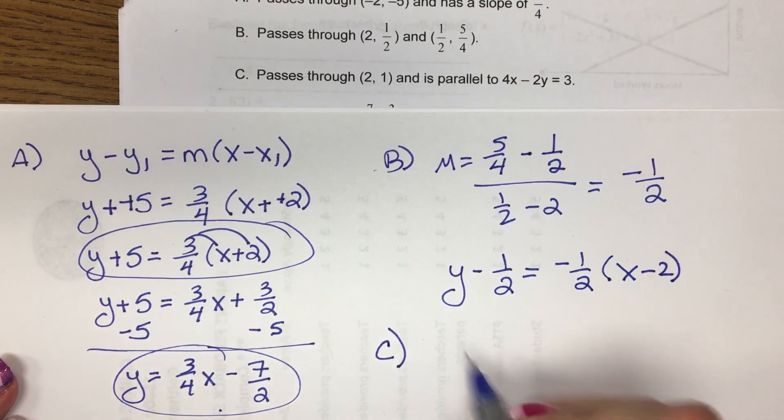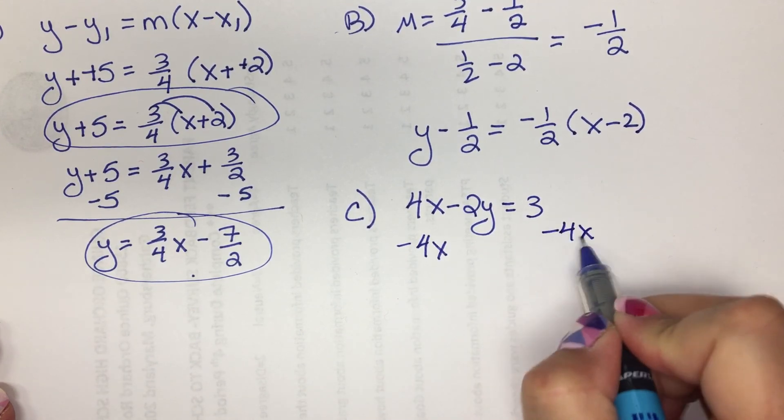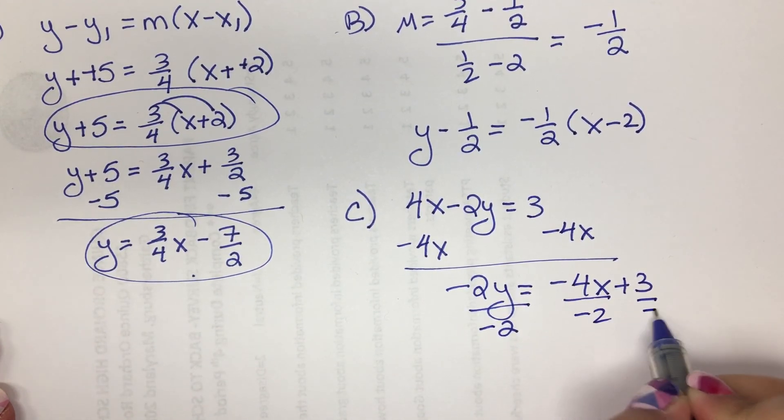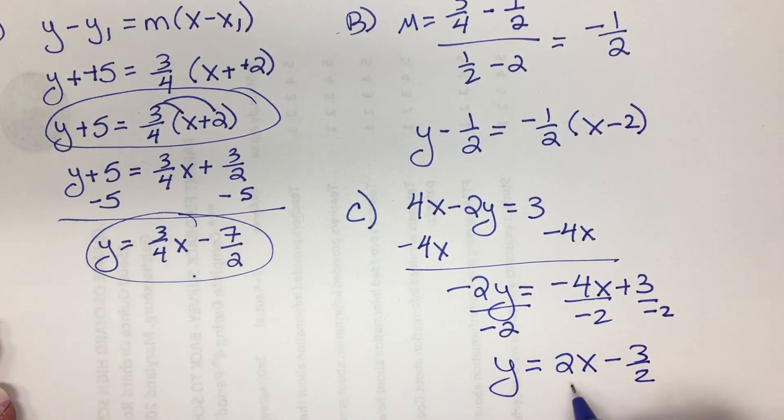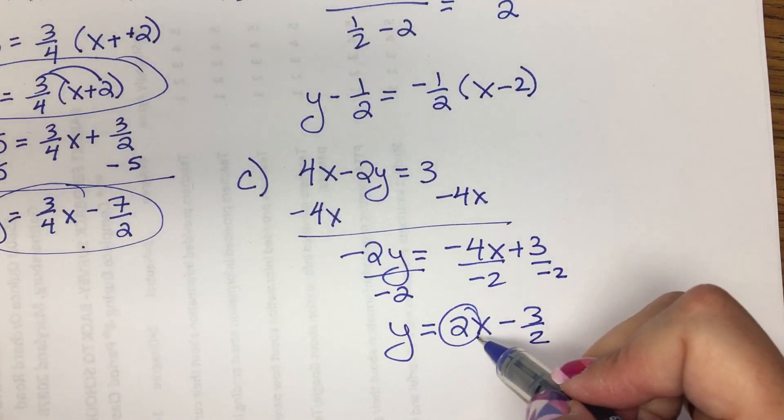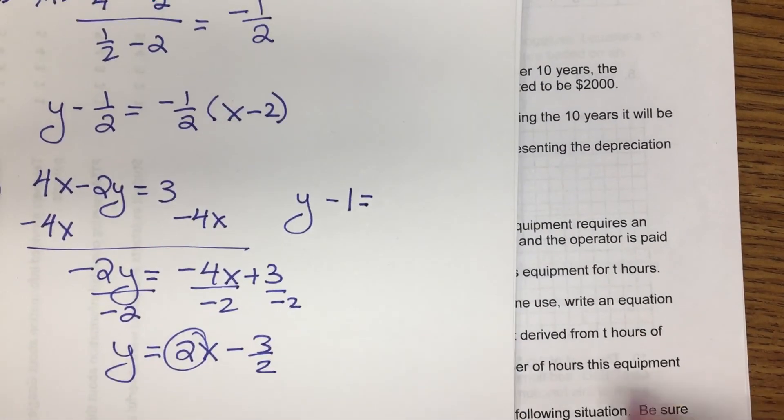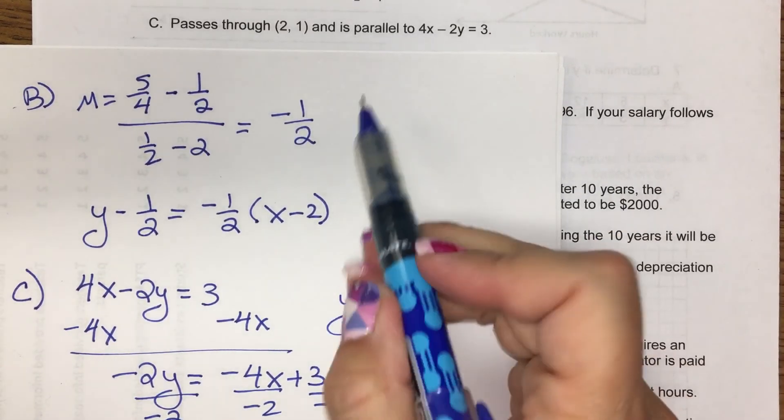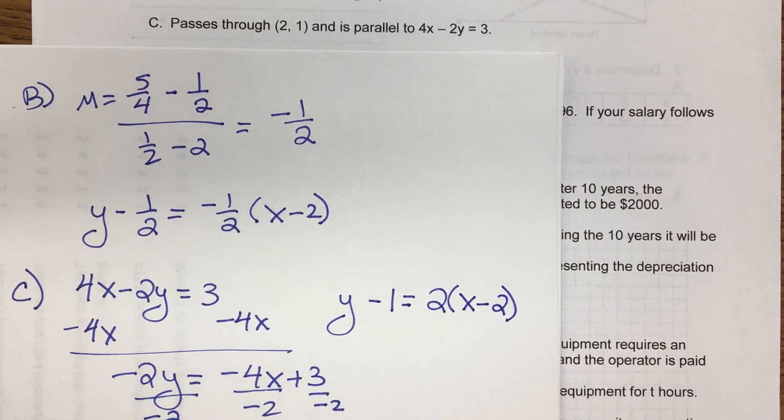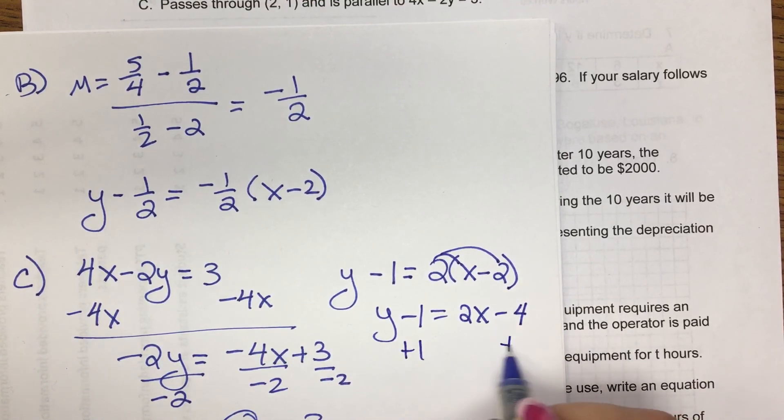Now for c, we first have to take this equation and isolate y to figure out what the slope is. So I'm going to divide everything by negative 2. So 2 is the slope. And the question asks for parallel through this point. So I'm going to use the slope 2. Hang on, let me get closer to the problem. So it's going to be y minus 1 because of the 1 here equals 2 and then x minus 2. So that is the equation in point-slope form. I can modify it to find slope-intercept.